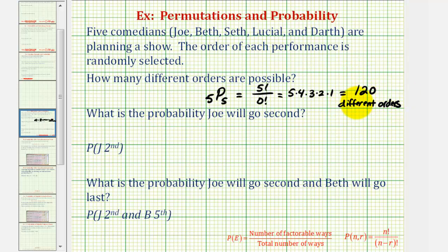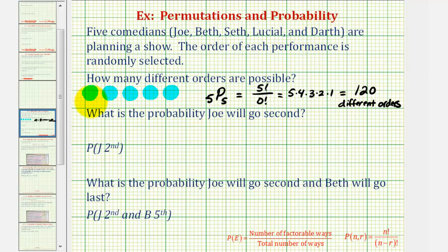Let's also take a look at this using the counting principle. We view this as a series of events — since there are five people being ordered, there are five events, and we determine the product of the number of ways each event can occur. Anybody can be first, so there are five ways to select the first position, four ways for the second, three for the third, two for the fourth, and one for the last. Notice this product is five factorial, giving us the same result of 120.